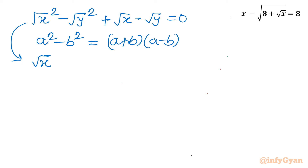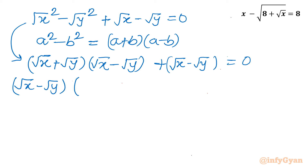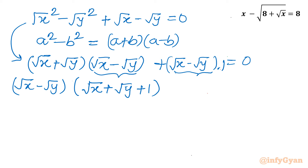Let us apply that identity. So our equation becomes: open bracket root x plus root y, close bracket, times open bracket root x minus root y, close bracket, plus root x minus root y equal to 0. Now it is obvious that root x minus root y is common. Taking that common, we get: root x minus root y, times the quantity root x plus root y plus 1, equal to 0.